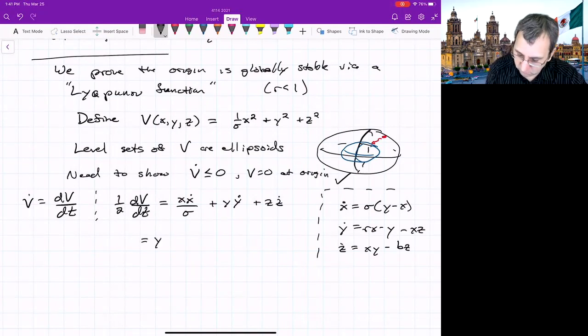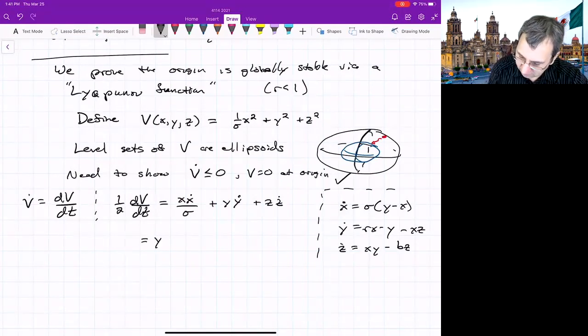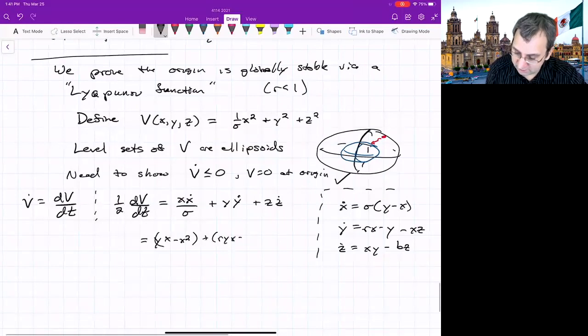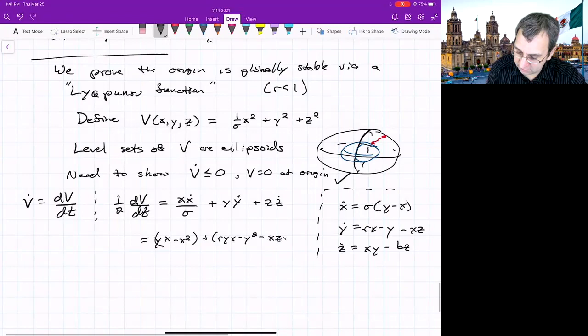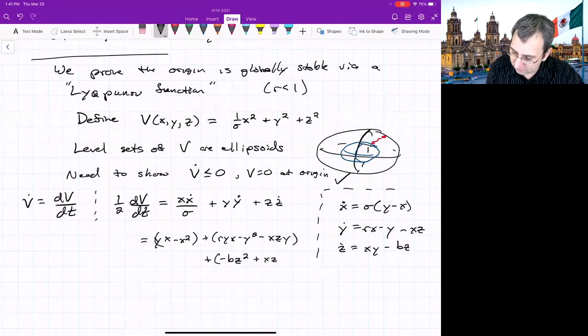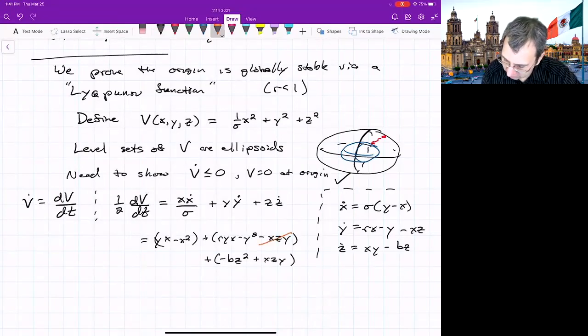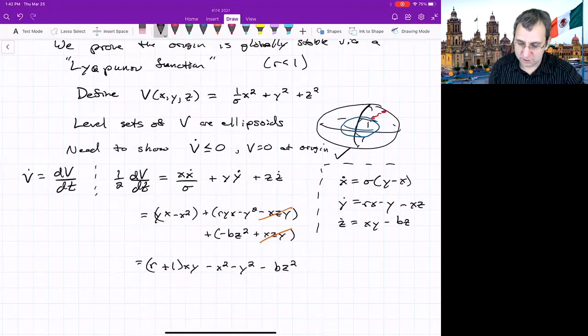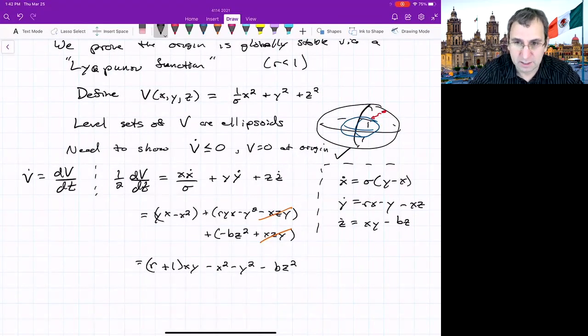Plug everything in. And we've got y. Remember, because there's that sigma there. So this becomes y(x minus x^2). What do we get for this other term? ry*x minus y^2 minus xzy. And for the final term, we have minus bz^2 plus xzy. And I've written it that way just so that you could see that these two will cancel out. We can collect some terms here. We get (r+1)xy minus x^2 minus y^2 minus bz^2.